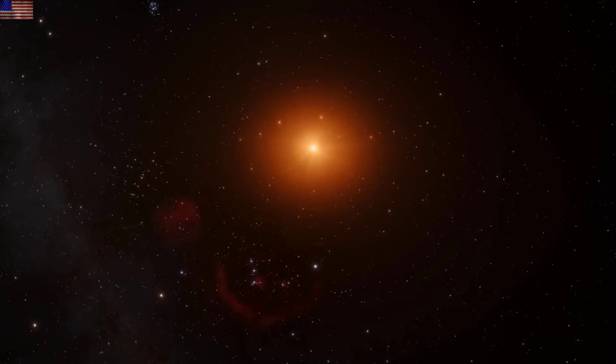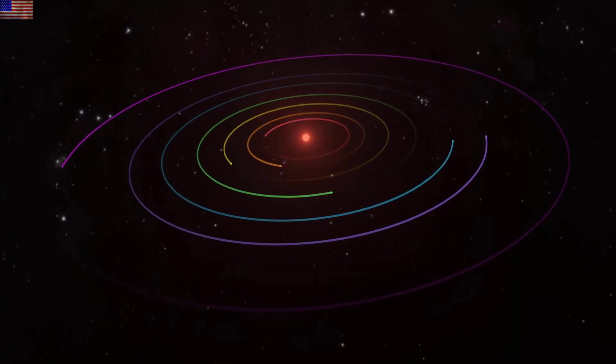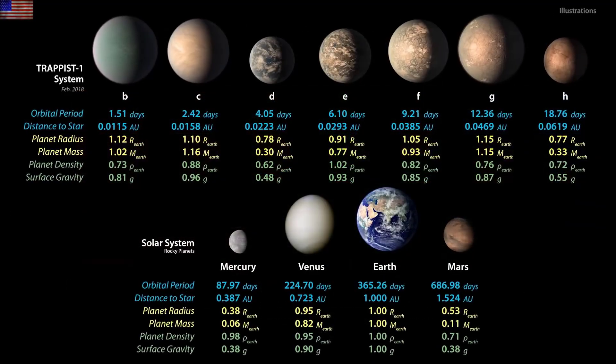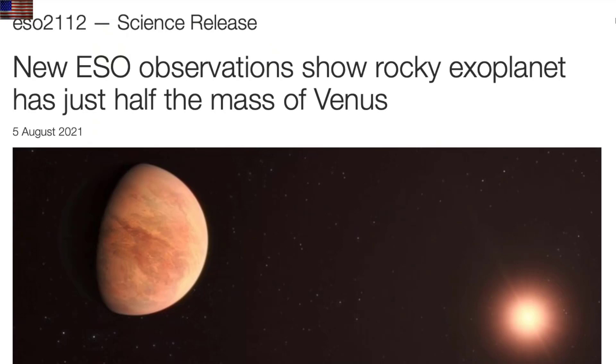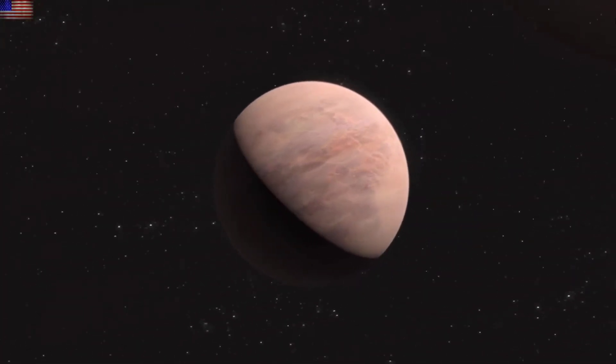Folks, who remembers TRAPPIST-1? Who remembers the discovery and how amazing it was to get update after update, basically feeling like we got to know those alien worlds. Today, we've got the next in the super-studied systems, and it's called L9859. Not the most stunning name, but it's got one planet half the mass of Venus.